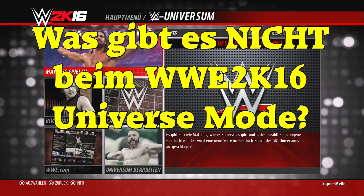Weiterhin nicht dabei, oder besser gesagt neu nicht dabei, ist der Storybaum bei den Rivalitäten. Das gibt es nicht mehr – es gibt ihn nur noch bei der Last-Gen-Variante, bei der aktuellen Konsole ist er komplett weggefallen. Das heißt, ihr könnt keine manuellen eigenen Storys mehr erstellen, das macht jetzt alles die KI selbst.